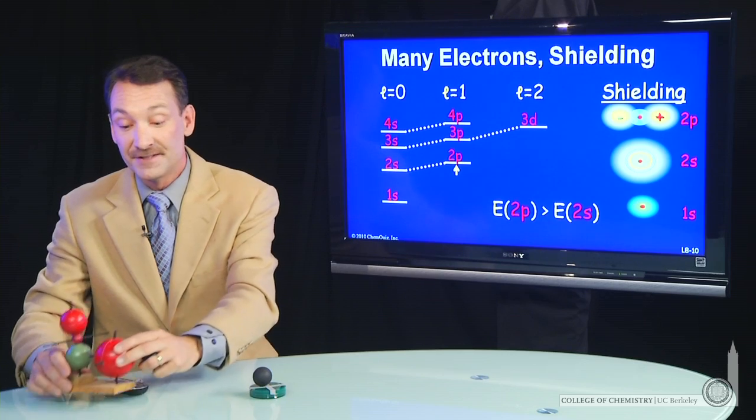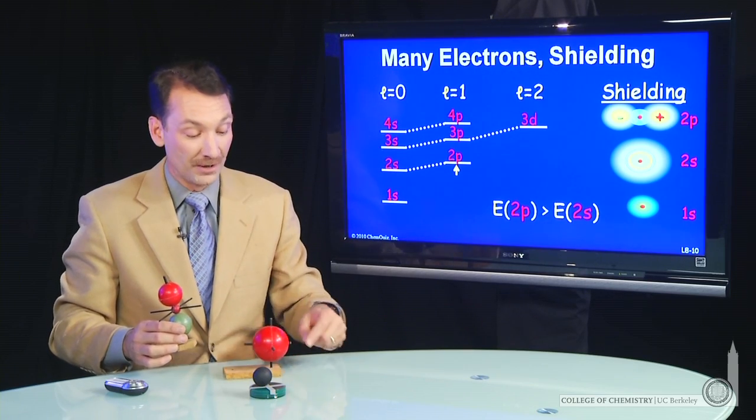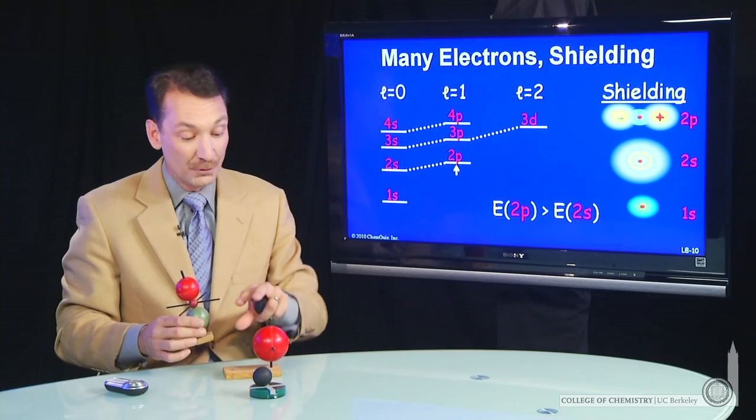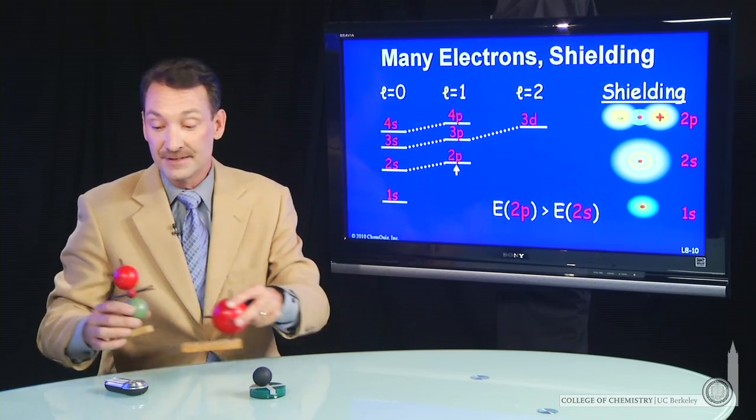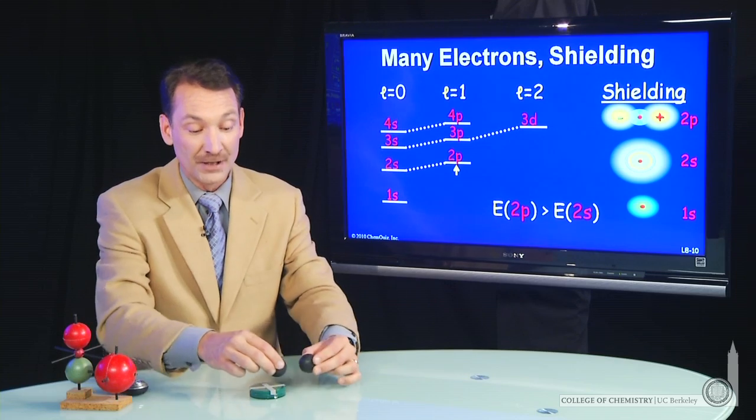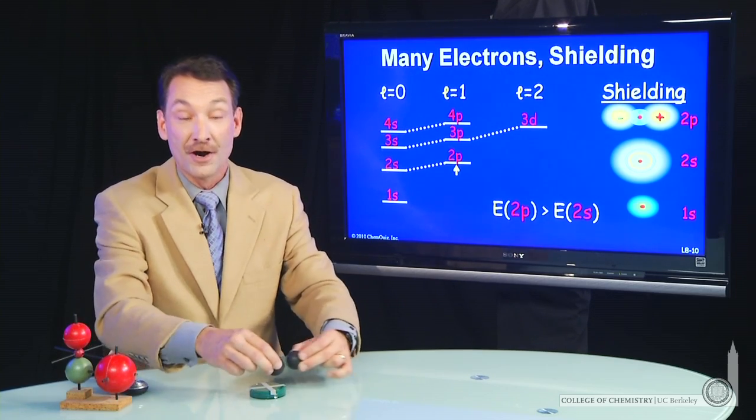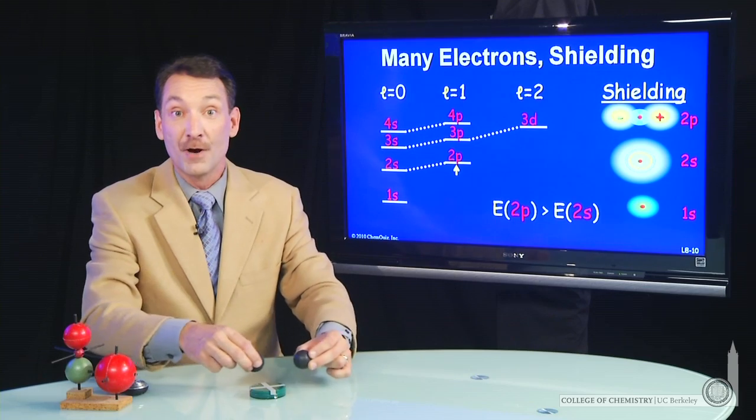S electrons that have this inner state don't shield each other very well. All s electrons have equal access to the nucleus. It's no node. So two electrons that have equal access to the nucleus pretty much always see the full nuclear charge, and they don't shield each other very well.